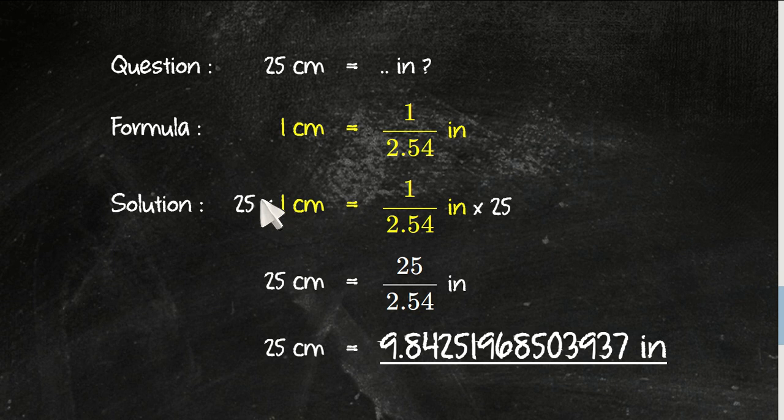And then, next to the number between the equal sign, you have 1 centimeter and you have 1 over 2.54 inches. You multiply it with 25 here and this one with 25 as well.